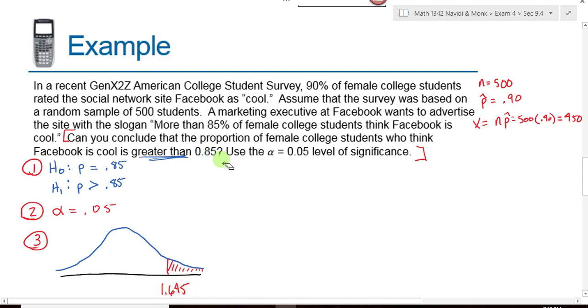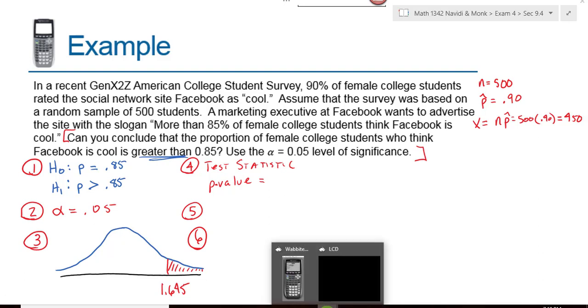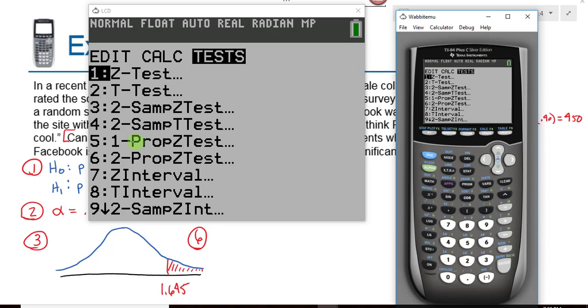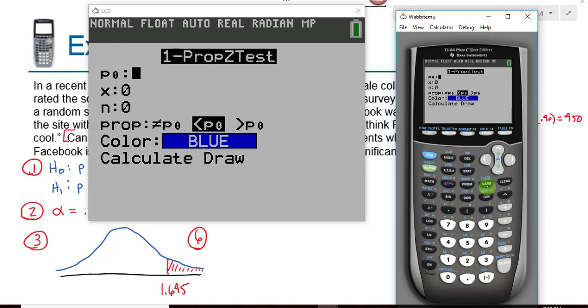Then I need to find my test statistic and my p-value, and then I can make my decision and draw my conclusion. We go to our calculators and we hit stat, go over to tests, and the test that we want is number 5, a one prop Z test.